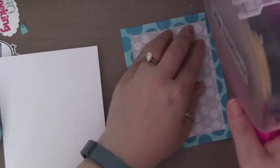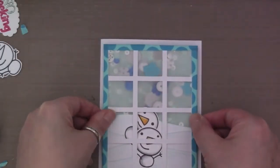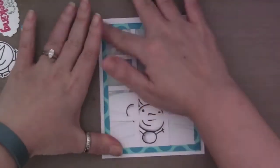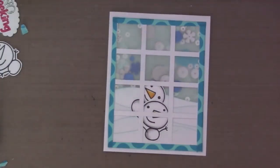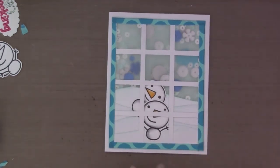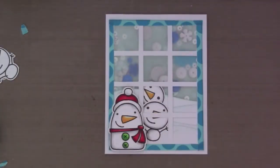And then I'm going to attach this whole panel to my A2 size card base, and I'm putting lots of adhesive. And there is this semi-shaker portion that you see in the back. And so I'm putting foam adhesive on the largest snowman, and he's going to be right there.